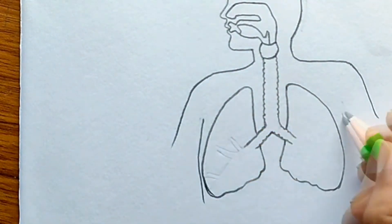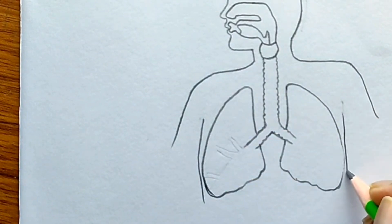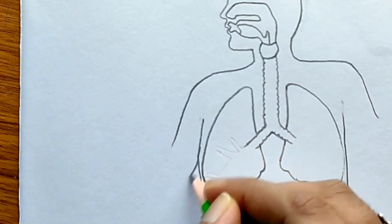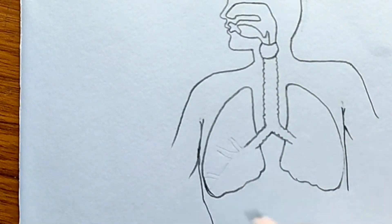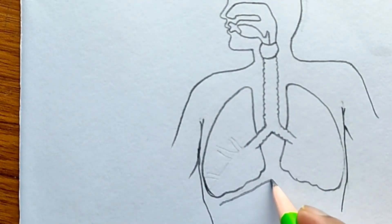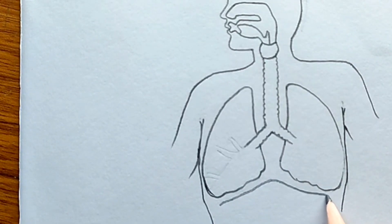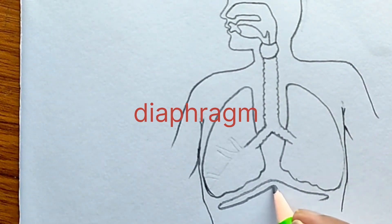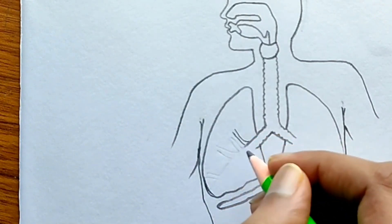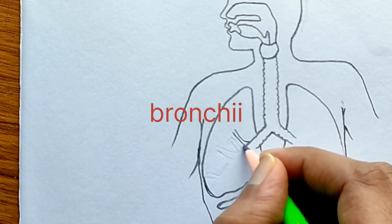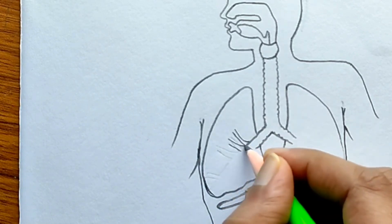Now I will draw the diaphragm. The diaphragm is a dome-like structure present in the lower part of the thoracic cavity. Movement of the diaphragm helps in inspiration and expiration. When the diaphragm moves upwards, it decreases the volume in the thoracic cavity and increases the air pressure in the lungs.